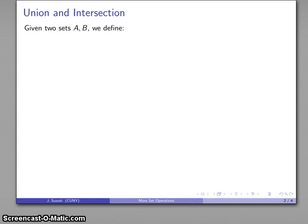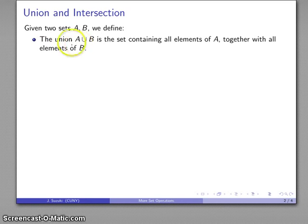So let's define a few set operations. Given two sets A and B, I'm going to define the union A union B using this union symbol, looks like a U, is going to be the set containing all elements of A together with all elements of B.